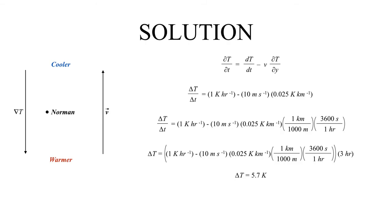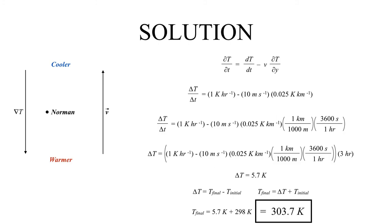Plugging everything into a calculator, we get that the change in temperature is 5.7 Kelvins. The initial temperature was 298 Kelvin, and using the fact that the change in temperature equals the final minus the initial, the final temperature is 5.7 plus 298, which equals 303.7 Kelvins. That's a nice positive change in temperature, which is exactly what we expected from the diagram — the diagram confirms our answer makes sense.